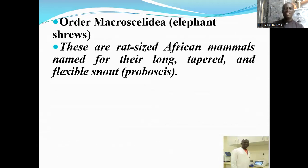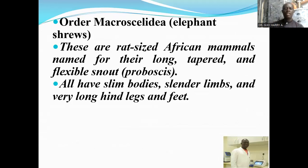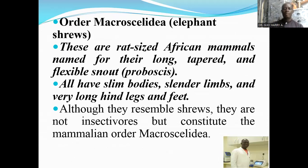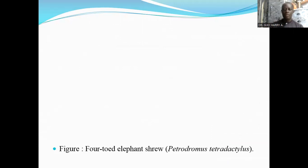The next order is the order Macroscelidea, which consists of the elephant shrews. These are rat-sized African mammals named for their long, tapered, and flexible snout — the proboscis. All have slim bodies, slender limbs, and very long hind legs and feet. Although they resemble shrews, they are not insectivores, but constitute the mammalian order Macroscelidea. Here are pictures of the elephant shrews.